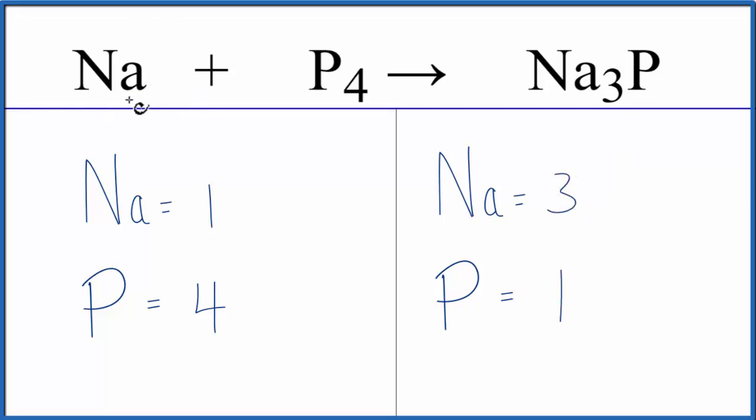Let's leave the sodium until last because it's all by itself, and let's figure out the phosphorus atoms. We have four here and one here, so we'll put a coefficient of four in front of the Na₃P. This four applies to everything, so we have one phosphorus times four. That'll give us four of the phosphorus atoms. Those are balanced.